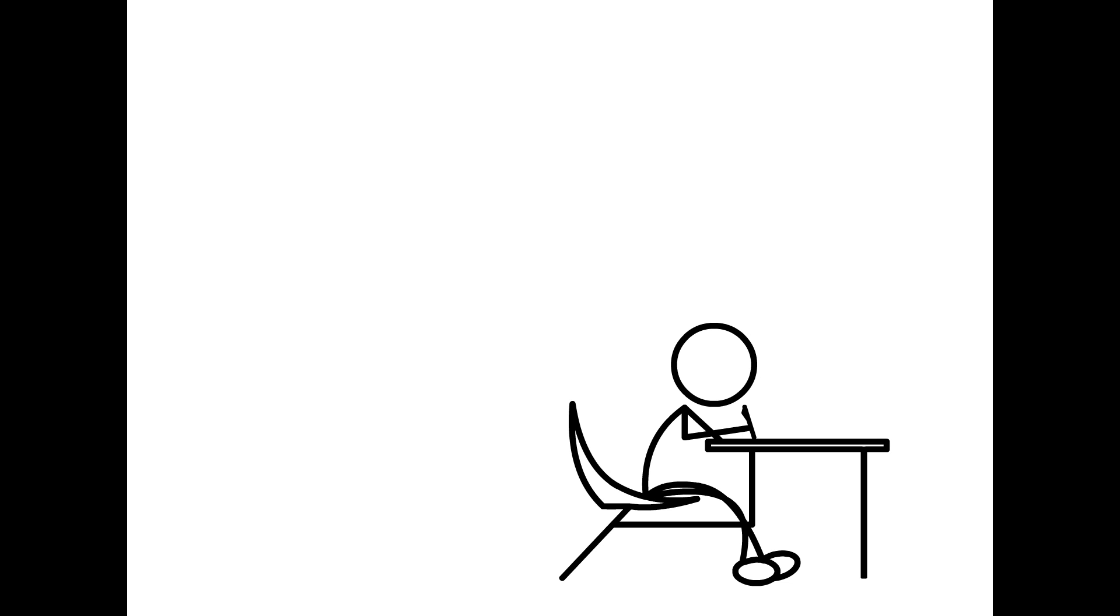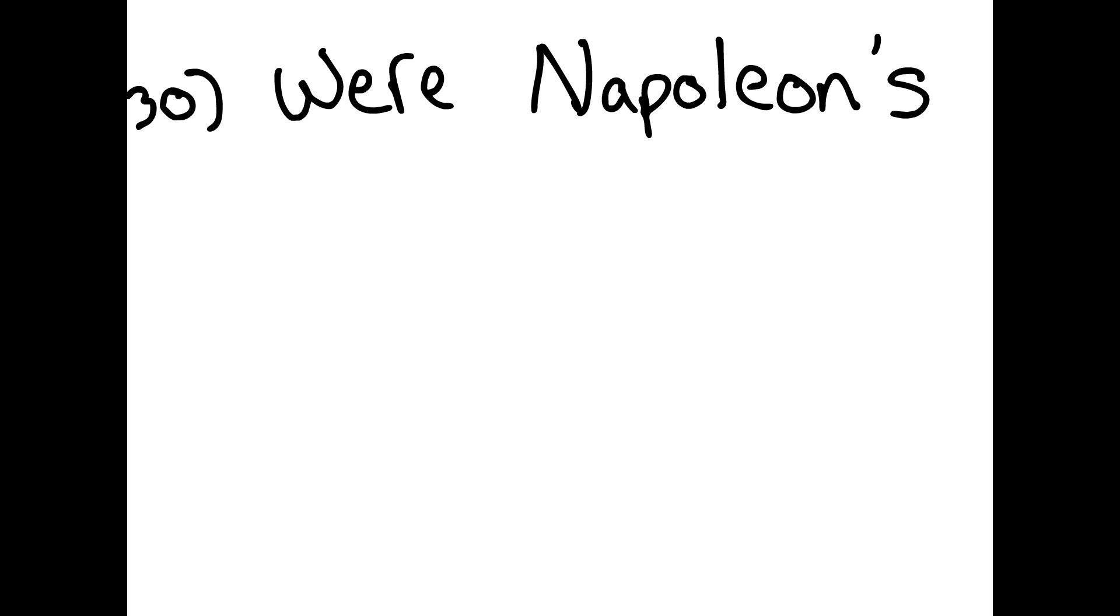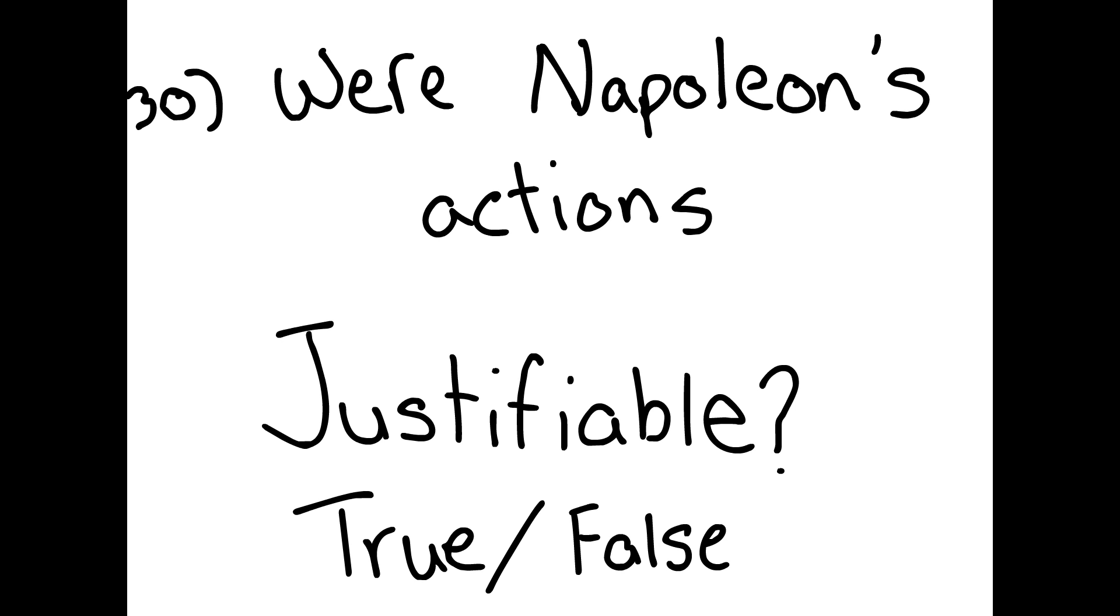So now you're taking the test and it's all true and false and it's all in your notes, so you're doing all right until you get to the last question that says were Napoleon's actions justifiable, true or false, and you don't have this in your notes. So what you have to do is think about all the things you can remember about Napoleon, process this information, and answer the question.